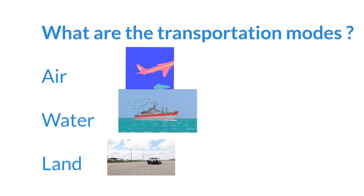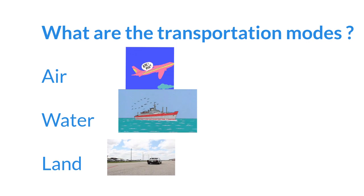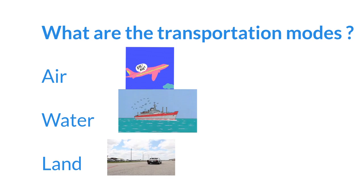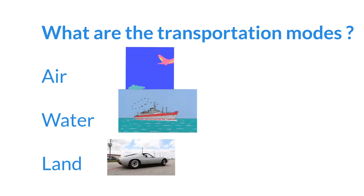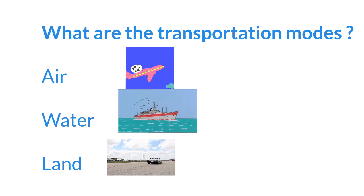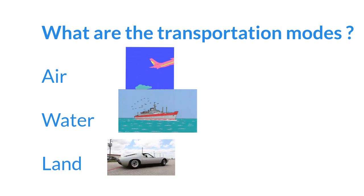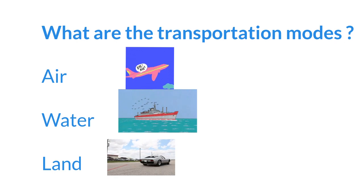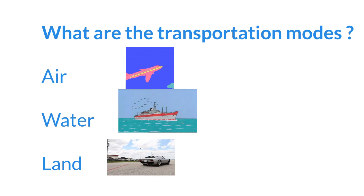We can sort these transportation modes into three groups: land, water, and air. Land transportation includes things like cars and buses. Water transportation includes boats and big ships. Air transportation includes airplanes. So we have land, water, and air — three special groups for our transportation friends. It's like they have their own neighborhoods.